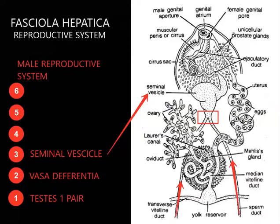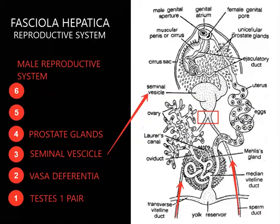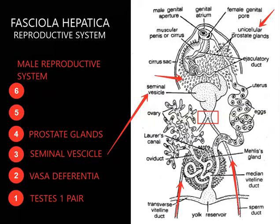The seminal vesicle joins the prostatic duct, which leads to the fourth part — the prostate glands. These are a very peculiar feature: they are unicellular, meaning there is no specific prostate gland as seen in other animals. In Fasciola hepatica, these glands are unicellular and found scattered. In the diagram you can see a number of these unicellular prostate glands.